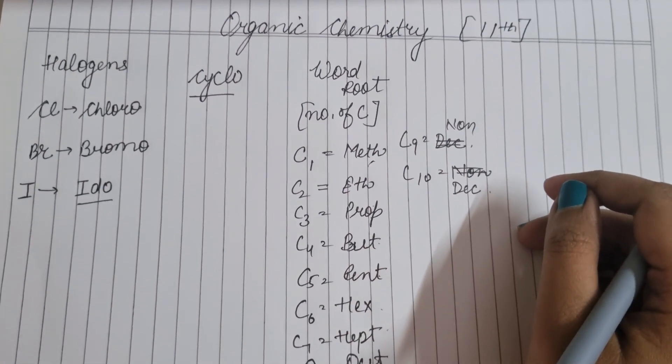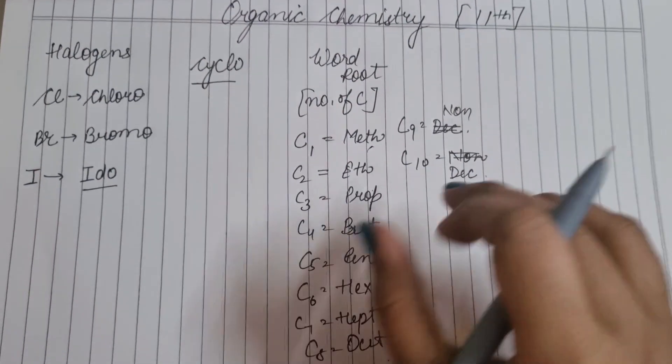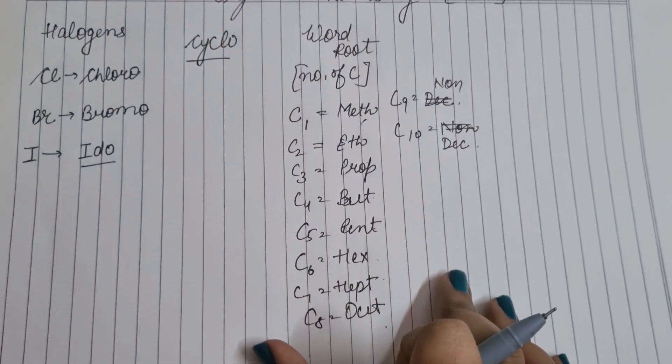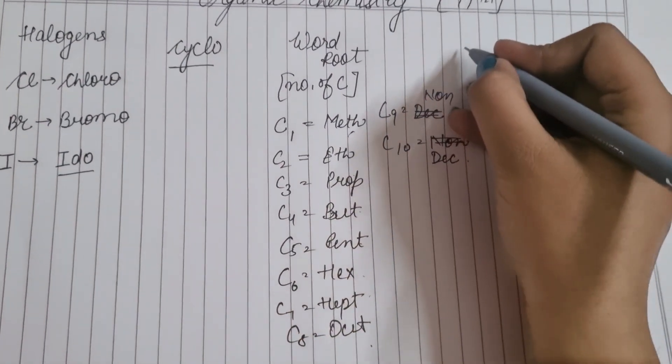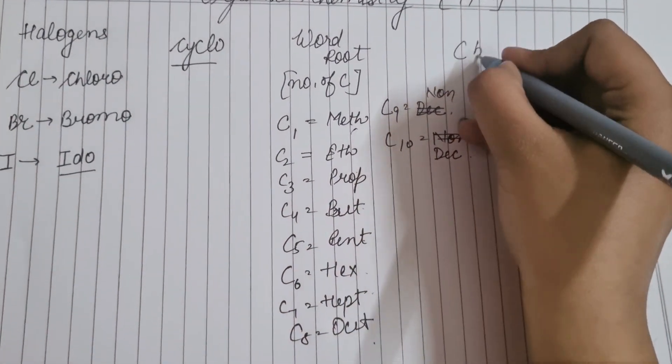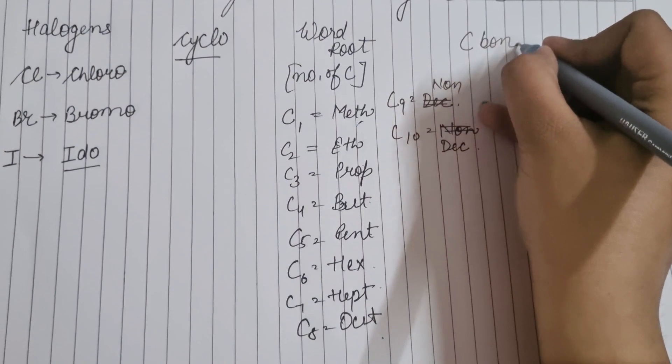अगर हम बात करें यहाँ पर students, यह हमारा word root है। Then उसके बाद, carbon-carbon bond के बारे में बात करते हैं।